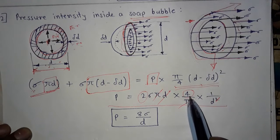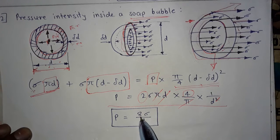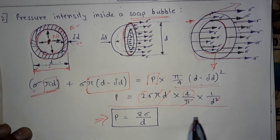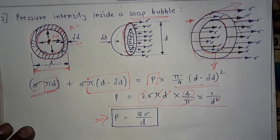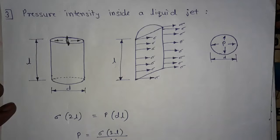After cancelling π and d terms, 4 × 2 = 8, so we get P = 8σ/d. This is the equation for excess pressure developed inside a soap bubble.